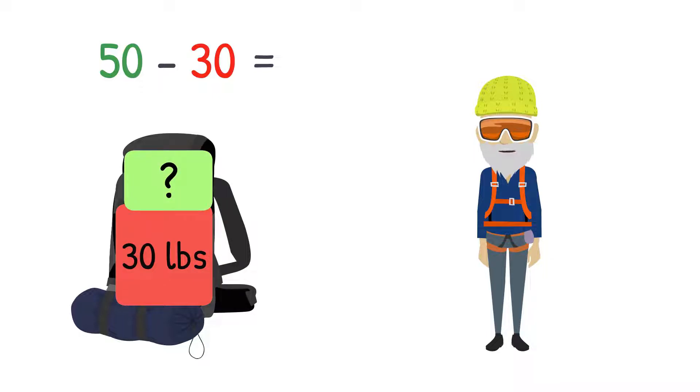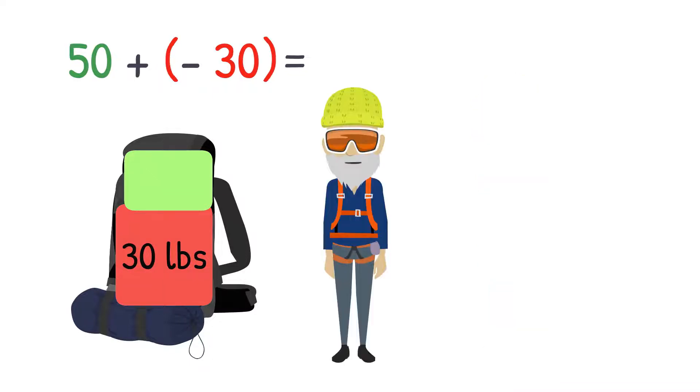When you are subtracting integers, you actually need to add the opposite or additive inverse. So 50 minus 30 becomes 50 plus negative 30, which equals 20.